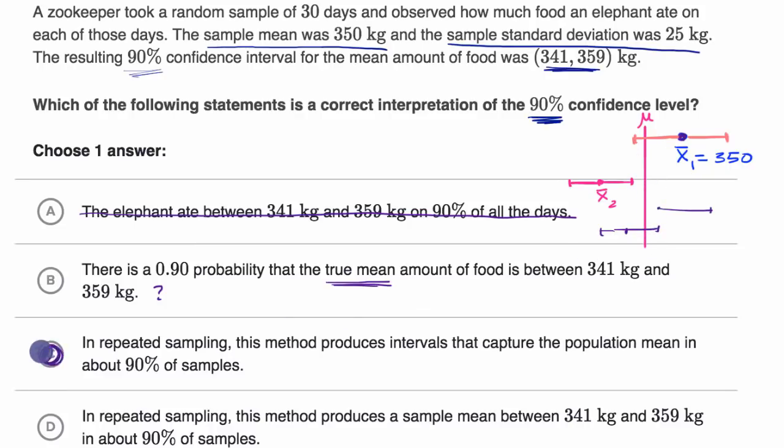But let's just read choice D to rule it out. In repeated sampling, this method produces a sample mean between 341 kilograms and 359 kilograms in about 90% of samples. No, the confidence interval does not put a constraint on that 90% of the time you will have a sample mean between these values. It is not trying to do that. It is definitely choice C.